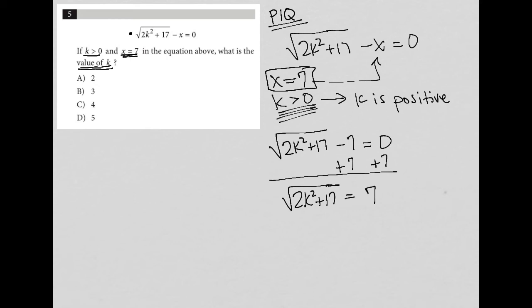Anytime you isolate a square root or radical, you can raise both sides to the second power. Doing so removes the square root. When you raise the square root to the second power, you can remove the square root.